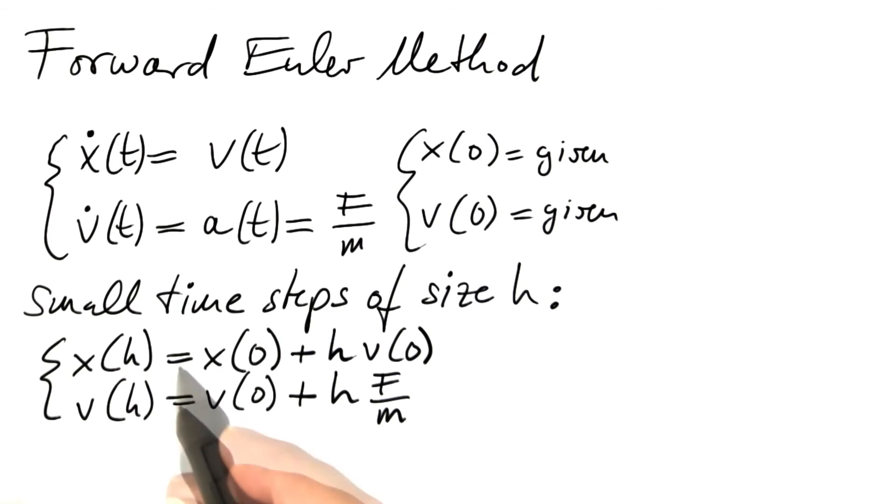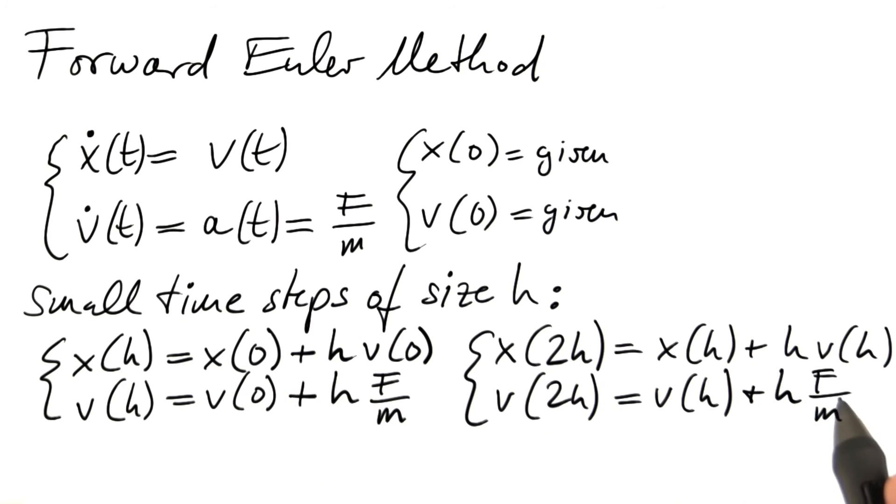I'm cheating a little when I write equal signs here. In the same fashion, we can get from time h to time 2h, doing another step. This is what the second step looks like.